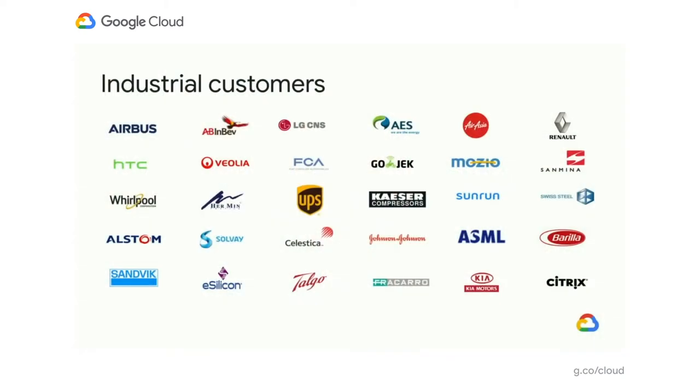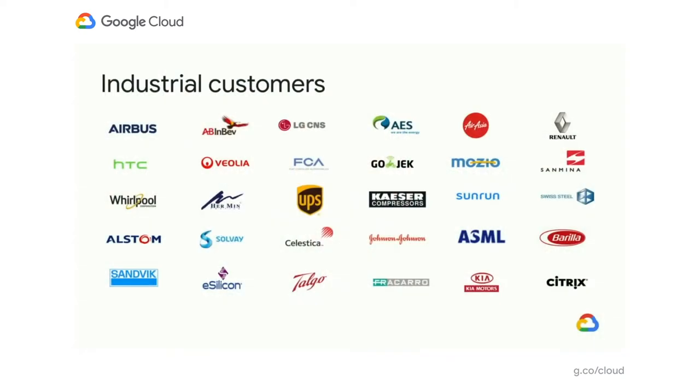We'll be discussing two manufacturing-focused solutions — adaptive controls and visual inspection — in more detail in this session. Here are some of the companies that are trusting Google to transform their industrial operations and businesses using AI and machine learning technologies.